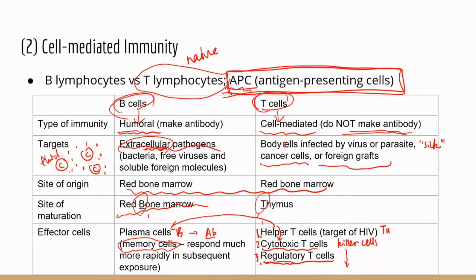Naive T cells have never been exposed to antigens — they don't know what the antigen is like or what to do. These naive T cells need to be exposed to antigens so they know what they're looking for. That's the job of antigen presenting cells: they swallow antigens, present part of the antigen on the cell surface to T cells, and once the T cells are exposed, they become functional T cells that know what to target and try to destroy.